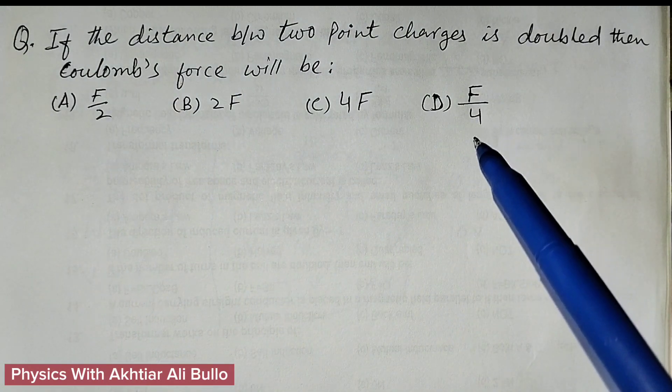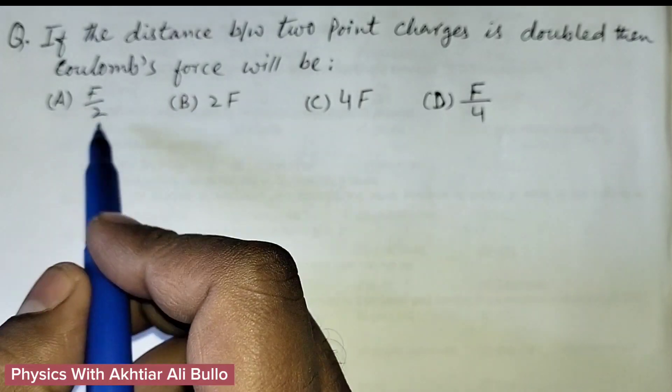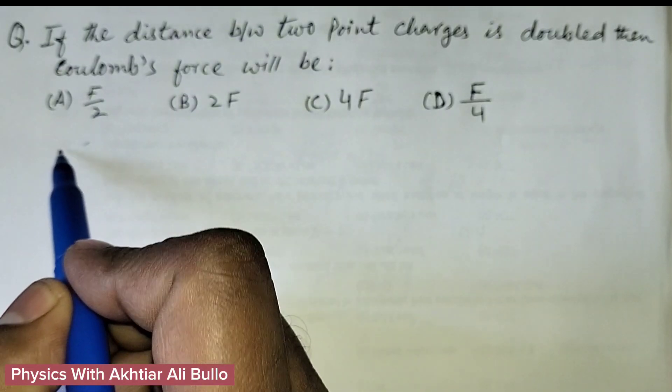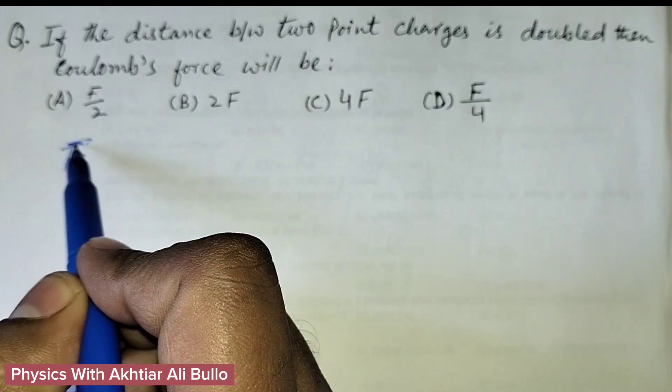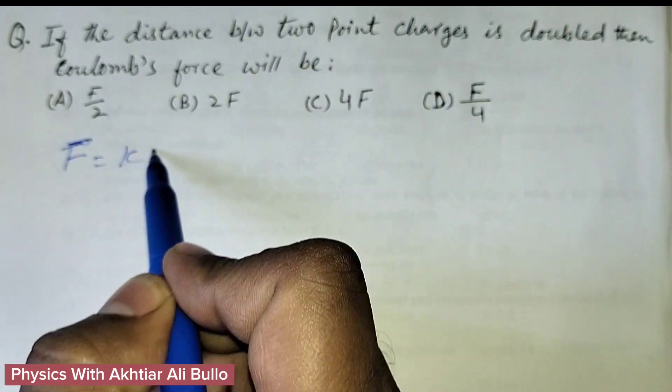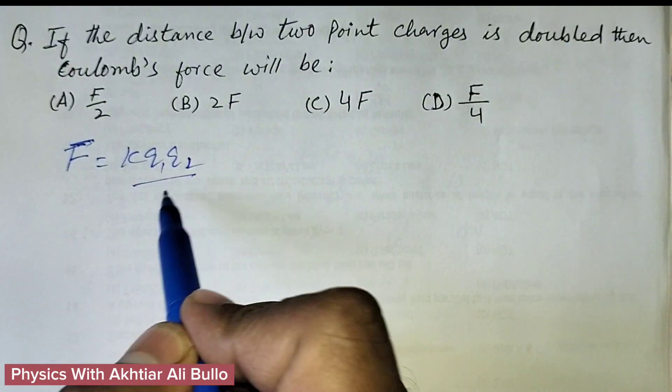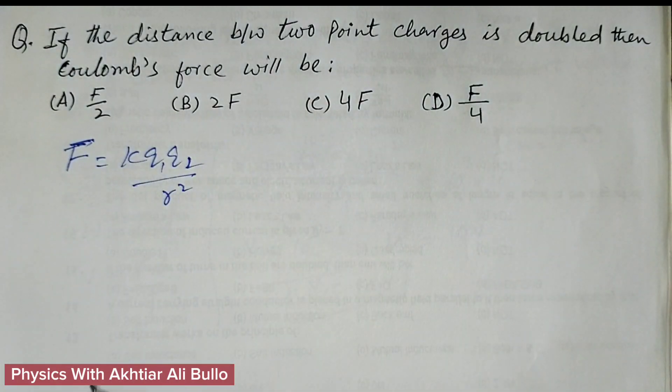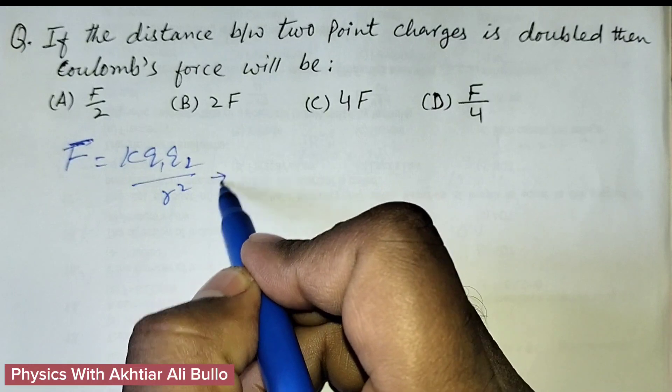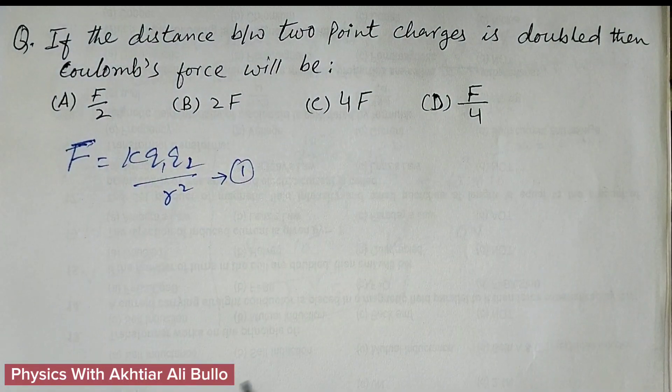D) F upon 4. According to Coulomb's law, Coulomb's force F is equal to K Q1 Q2 upon R square. This is equation number 1.